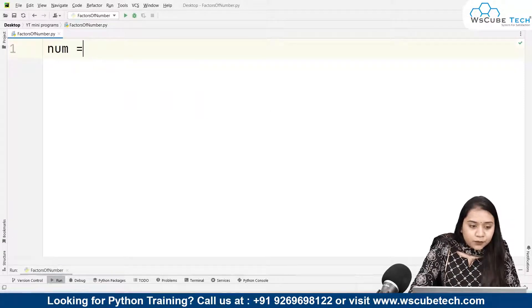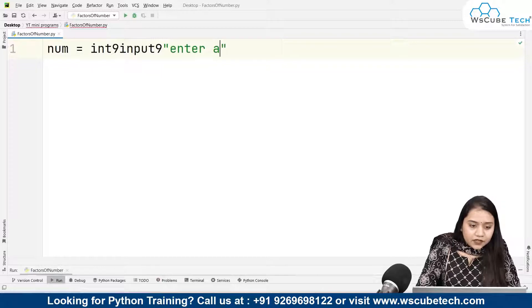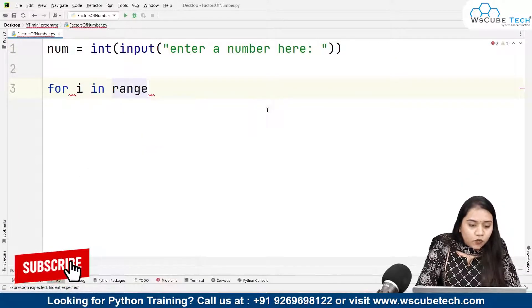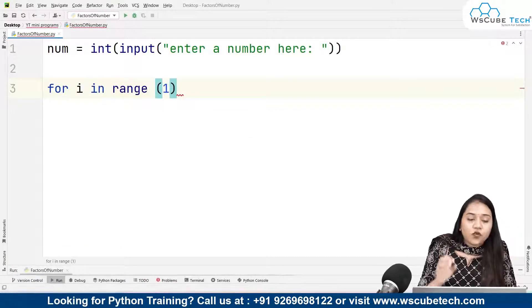So here I'll be taking a number as an input. That number equals int input, enter a number here. After this we will be using a for loop: for i in range. Now what will be this range? This range will start from number 1 and it will go up to our number.